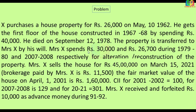The property is transferred to Mrs. X by his will. Mrs. X spends Rs. 30,000 and Rs. 26,700 during 1979-80 and 2007-08 respectively for alteration and reconstruction of the property. Mrs. X sells the house for Rs. 45,00,000 on March 15, 2021. Brokerage paid by Mrs. X is Rs. 11,500.